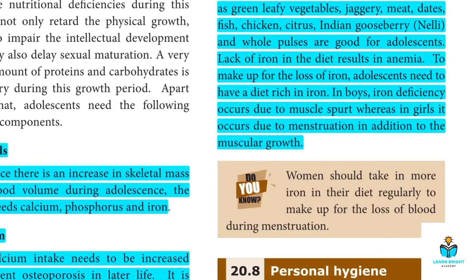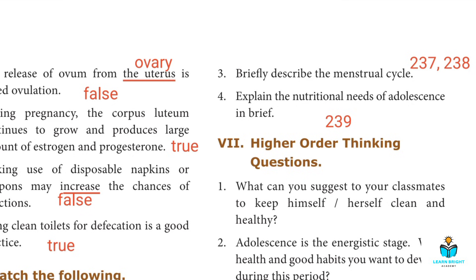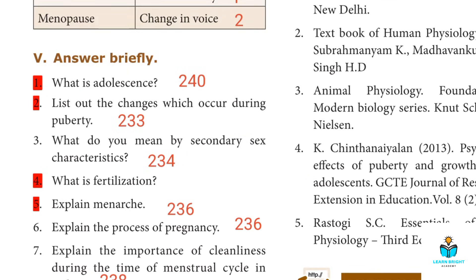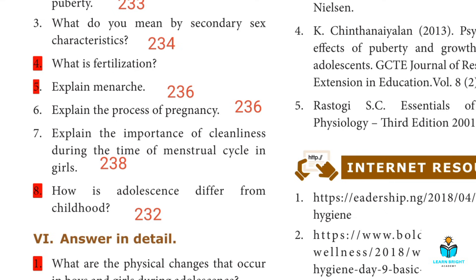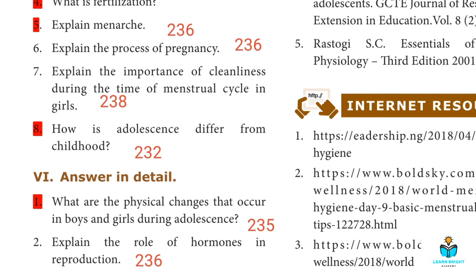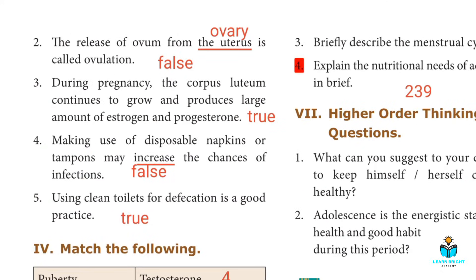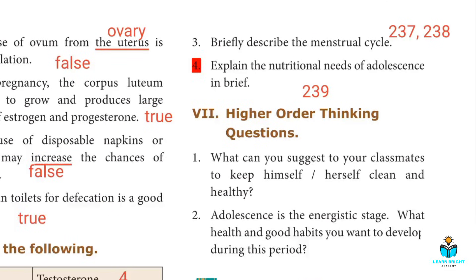Important questions summary: First question — what is adolescence? Second — list the changes during puberty. Fourth — what is fertilization? Fifth — explain menarche. Eighth — how is adolescence different from childhood? In detail: first — physical changes in boys and girls during adolescence; fourth — explain the nutritional needs of adolescence in brief.